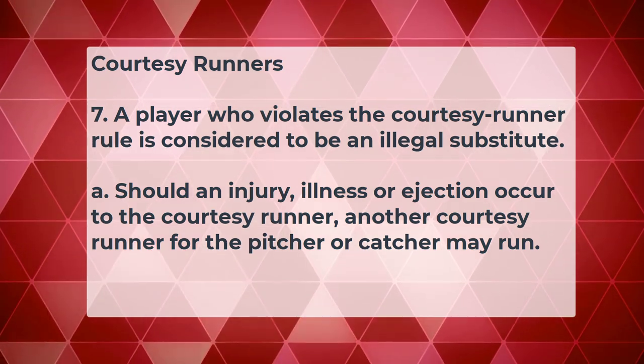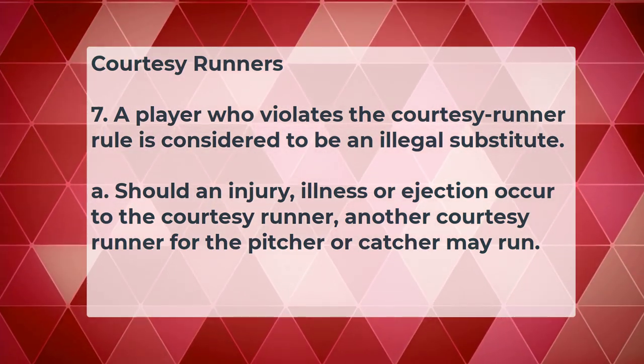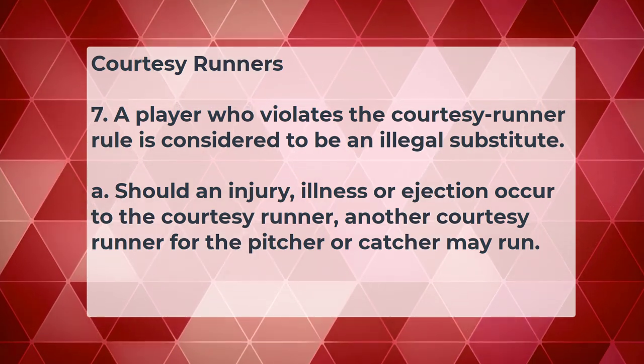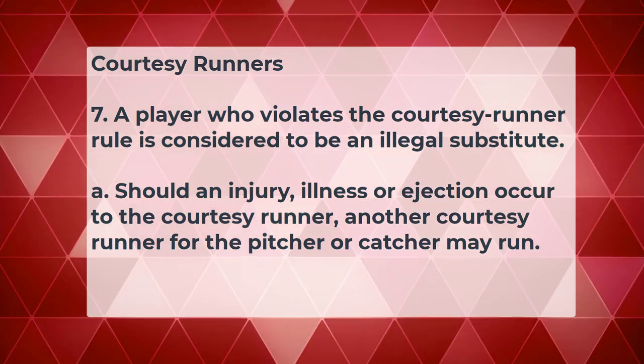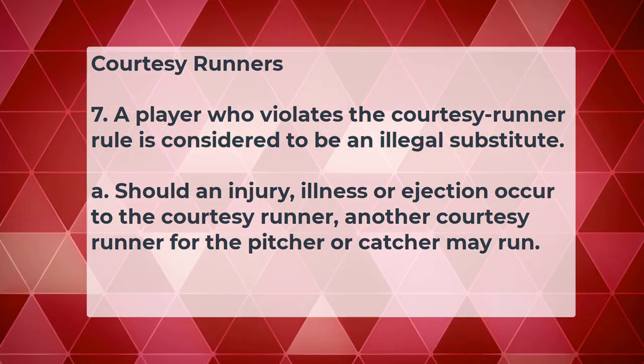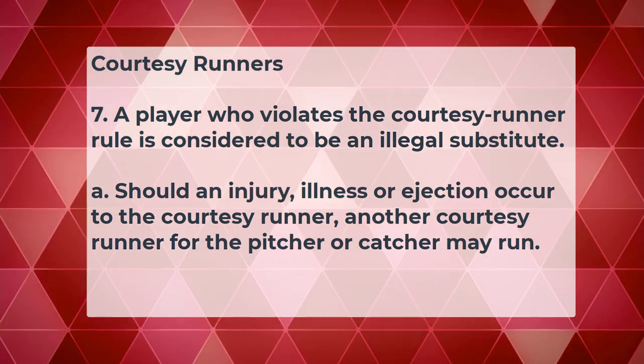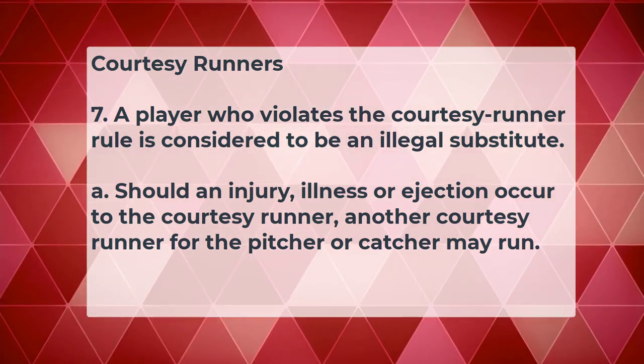Rule seven: a player who violates the courtesy runner rule is considered to be an illegal substitute. Should an injury, illness, or ejection occur to the courtesy runner, another courtesy runner for the pitcher or catcher may run. If they use an illegal courtesy runner that would be an illegal substitution. At any time they can substitute a courtesy runner with another courtesy runner, so long as they use an eligible player to fill that role.